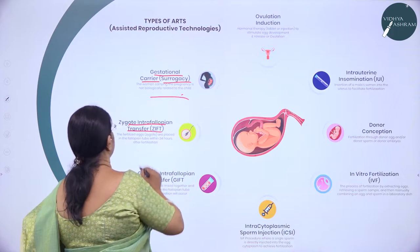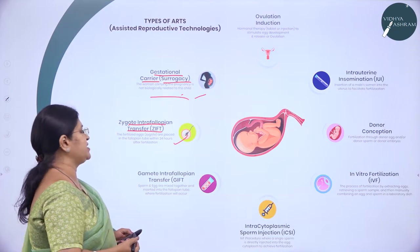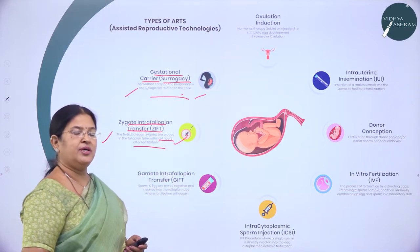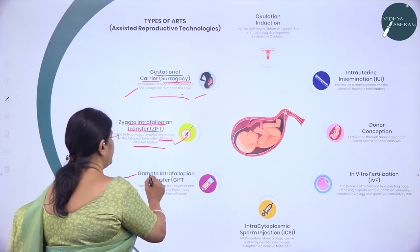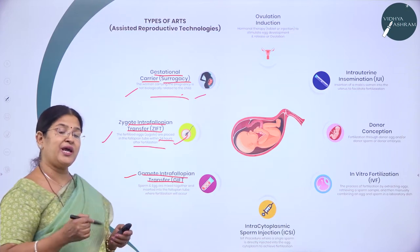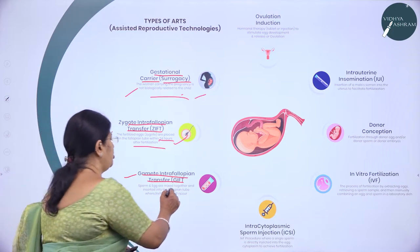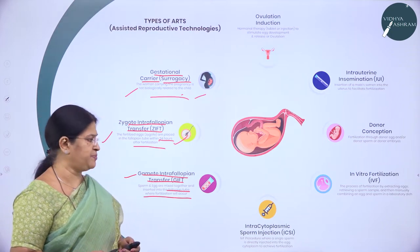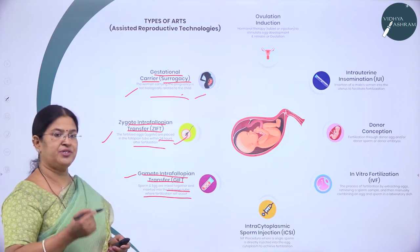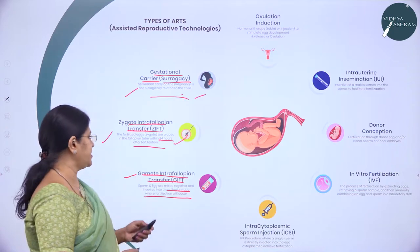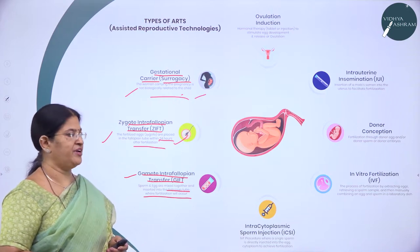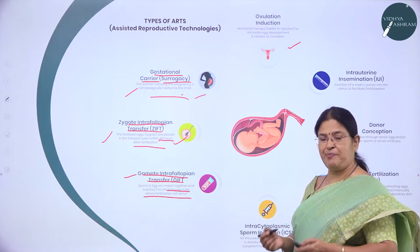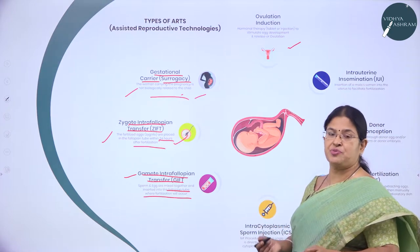Zygote Intrafallopian Transfer: the fertilized eggs, that is the zygotes, are placed in the fallopian tube within 24 hours after fertilization. GIFT — Gamete Intrafallopian Transfer — is where both the sperm and eggs are mixed together and inserted into the fallopian tube, where fertilization takes place at the ampullary-isthmic junction. The success rate of this technique is very high compared to IVF-ET.